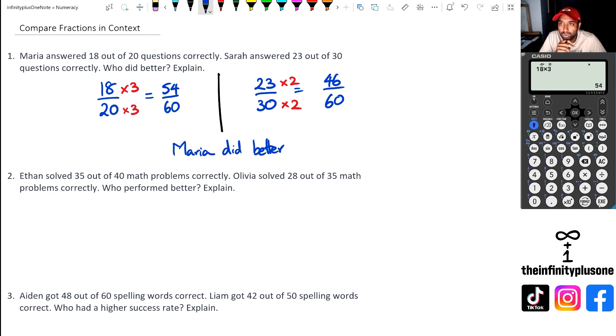Okay. Now looking at question number two, we've got Ethan that's actually solved 35 out of 40. So 35 out of 40. And then Olivia that's actually solved 28 out of 35. Now what we need to do is we need to figure out what's the lowest common multiple between 40 and 35. Now, once again, you can kind of just cross multiply them if you want to. And I think for this one, I'm going to show you folks the cross multiplication method. So just so that you've got a variety of different ways of doing this.